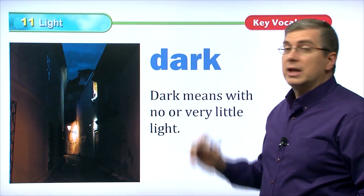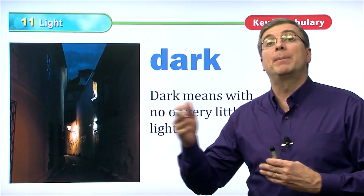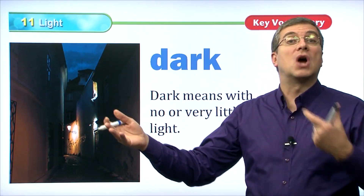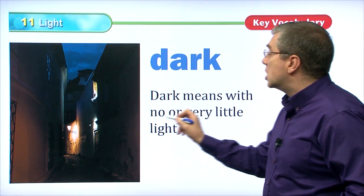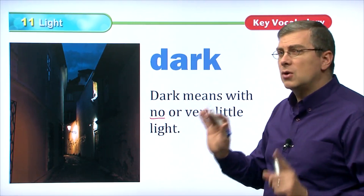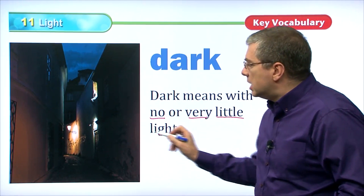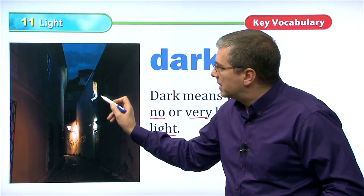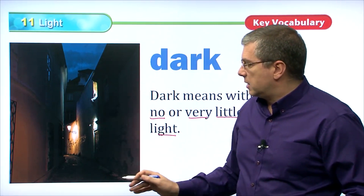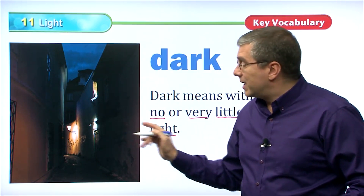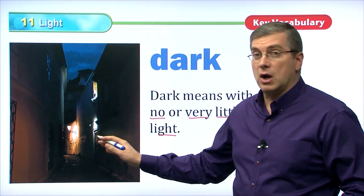Dark is the opposite of light. Dark means with no light or very little light. Sure, there's some light, but it's very little light. So it's dark in this alleyway. There's light, sure, we can see, but there's very little light. So it's dark. We say it's dark.